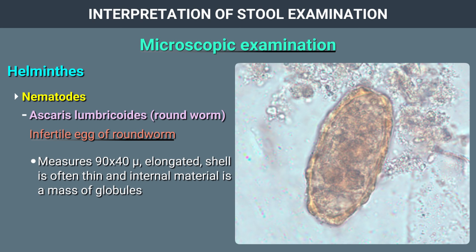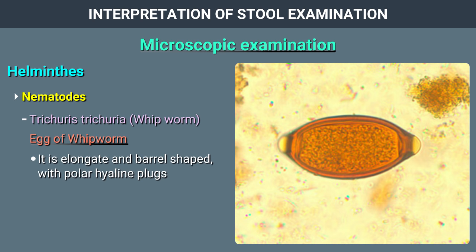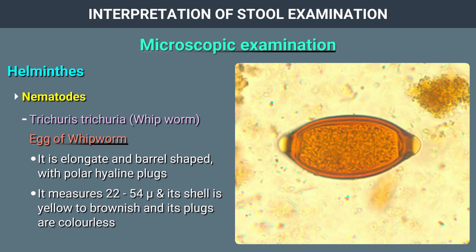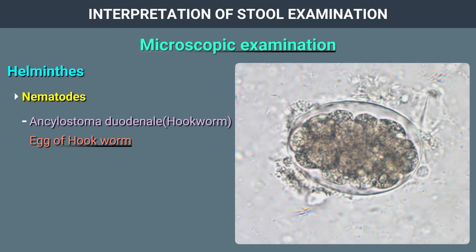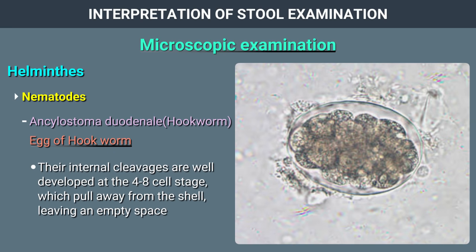Trichuris trichiura (whipworm): the egg of whipworm is elongate and barrel-shaped with polar hyaline plugs. It measures 22 to 54 microns, its shell is yellow to brownish, and the plugs are colourless. Ankylostoma duodenale (hookworm): the egg of hookworm is oval and ellipsoid, measures 60 by 40 microns, with thin-walled, smooth, and colourless shells. Internal cleavages are well developed at the 4 to 8 cell stage.